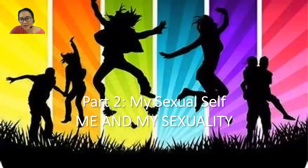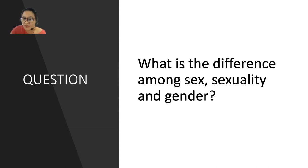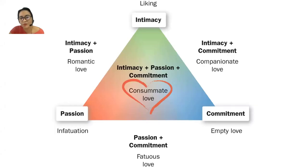You should be able to define the difference between sex, sexuality, and gender. Sex is the biological makeup. Gender is the orientation of the individual toward the role they are playing — a sociological construct. Sexuality refers to sexual preferences, such as LGBTQA+. These are different concepts. Regarding love, lust, and attraction — according to Robert Sternberg, we know what we are experiencing is love if it has three components: passion, commitment, and intimacy.